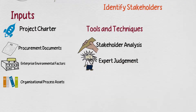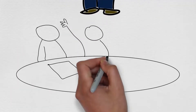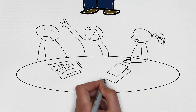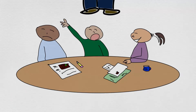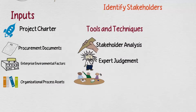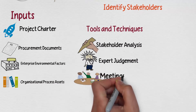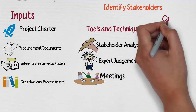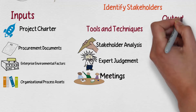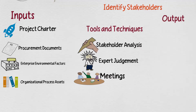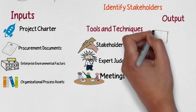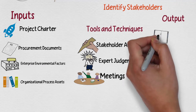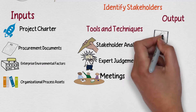A lot of that comes from expert judgment — the things we think about, or know, or that people who have worked on similar projects know. And a lot of it comes out in meetings — lots and lots of meetings and ways to document. Really, we can identify stakeholders any time throughout the project; it doesn't just mean in the beginning, even though we say it's an initiation process.